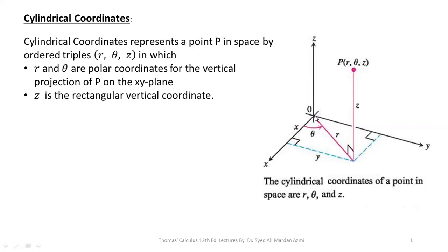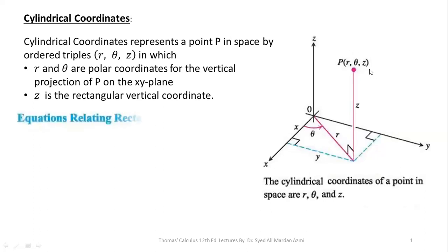Now, what is the concept here? If we consider a two-dimensional space with X and Y, then the coordinate of this point in polar coordinates will be R and Theta. And if you lift this point vertically with respect to Z, then the coordinates of this point become R, Theta, and Z. This will make a cylindrical coordinate system.